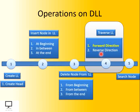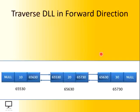To traverse the linked list in forward direction, you must have to create the linked list first and insert few nodes in that. How to create a linked list and how to insert a node — I have already covered that concept in a previous video session. You can go through that if you don't know the concept of creation of doubly linked list and insertion of a node.